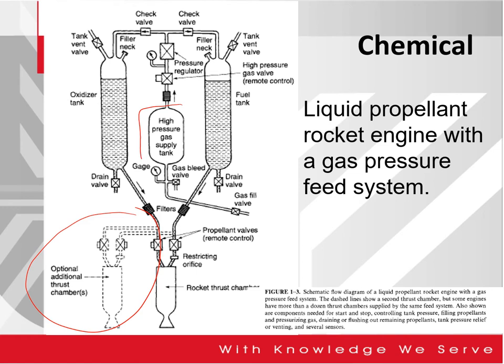It starts from the high pressure gas supply tank in the middle. We have the pressure regulator, the gas will be bled through a valve, a check valve, and we have the oxidizer tank and the fuel tank where it will be pumped into what we call the rocket thrust chamber.